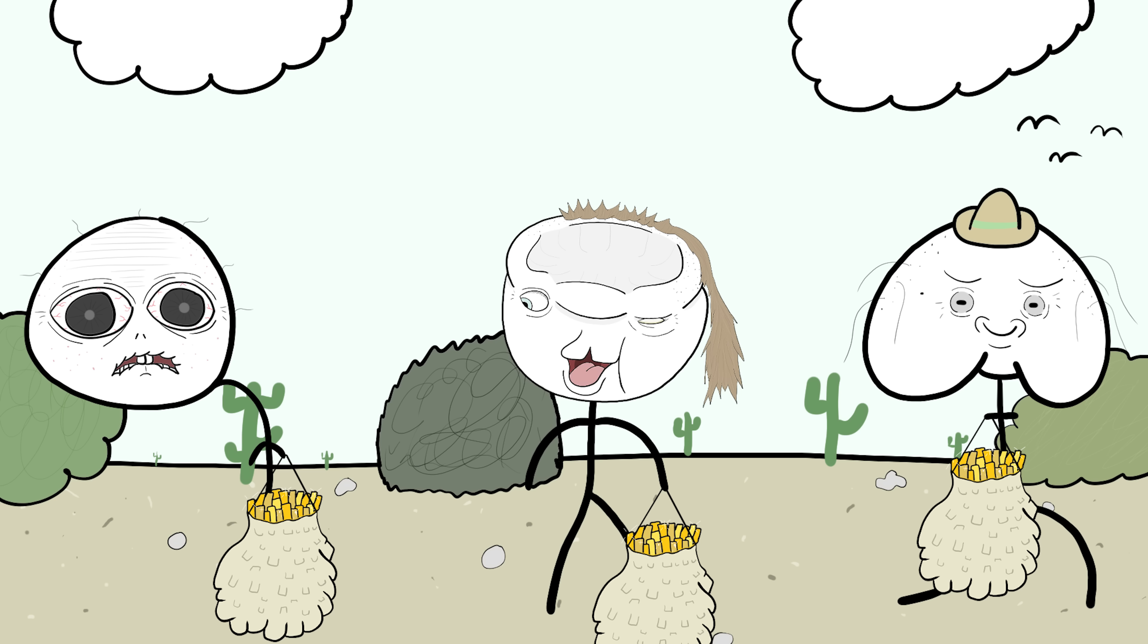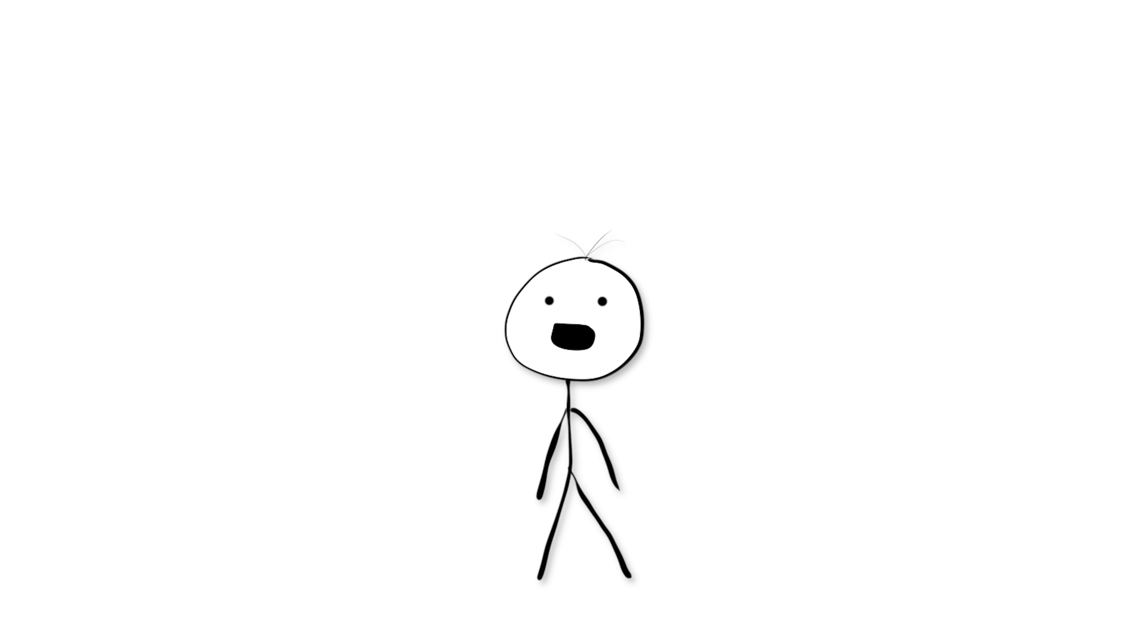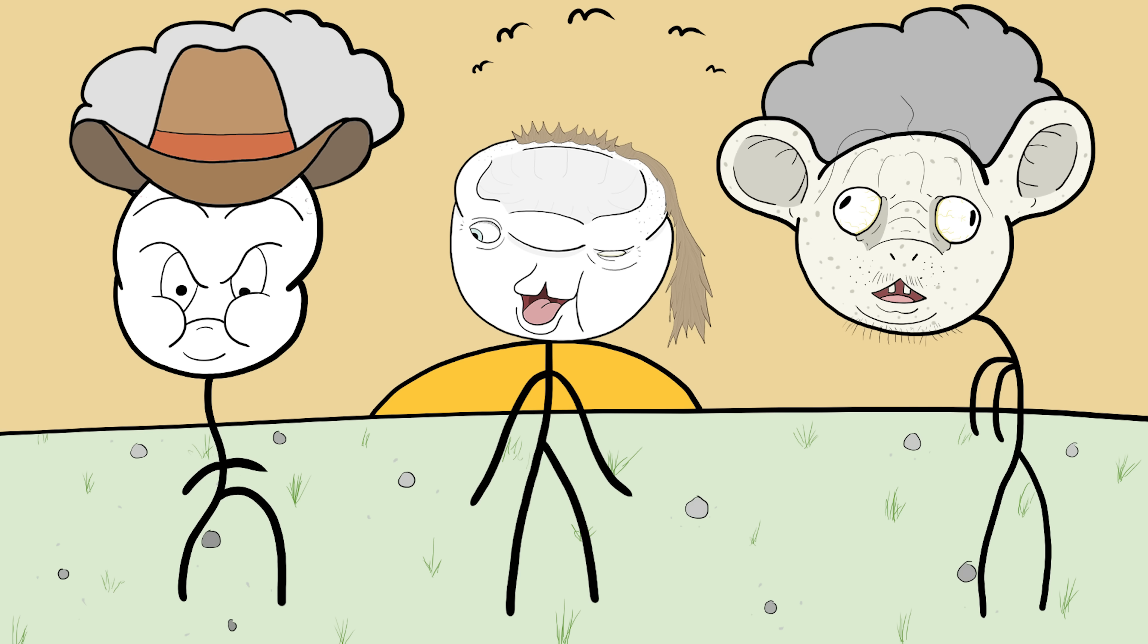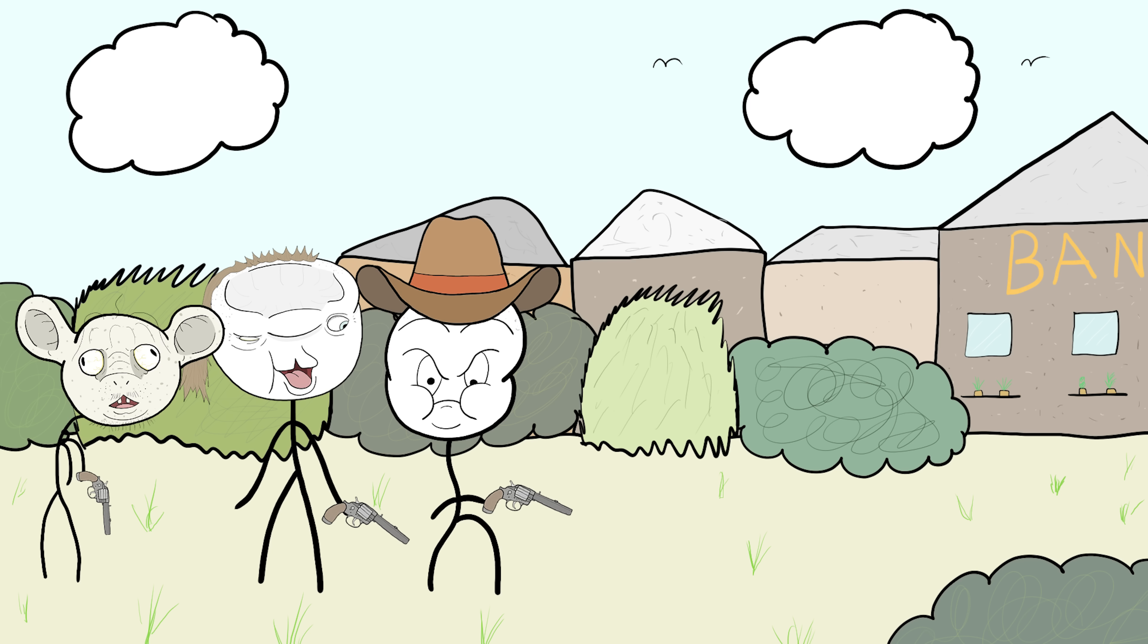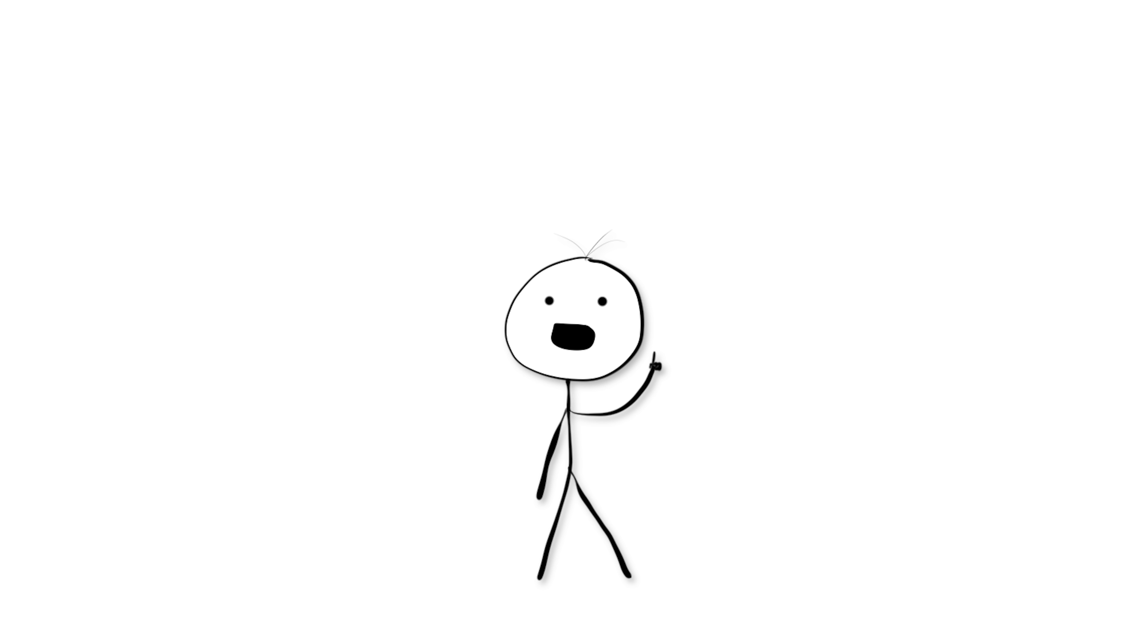And after this robbery, the gang would immediately split up for good. The following year in 1878, Sam must have gotten bored of being retired and rich. So he would put together a new gang. And on July 19th of the same year, they would attempt to rob a bank in Round Rock, Texas.